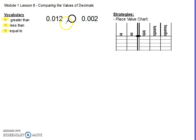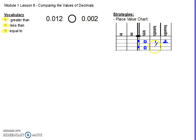I'm going to start with this number and put it in my place value chart. So I have my decimal here, then 0 tenths, 1 hundredth, and 2 thousandths. Then I take my next number and put that into my place value chart: 0 tenths, 0 hundredths, 2 thousandths. Here's one strategy you can use to get started.